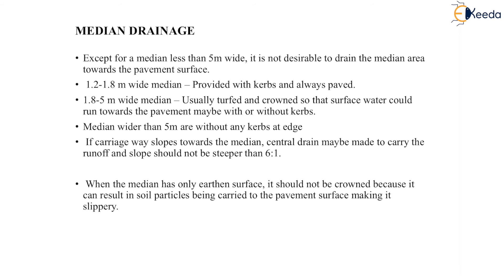Next is median drainage. Except for a median less than 5 meters wide, it is not desirable to drain the median area towards the pavement surface. A 1.2 to 1.8 meter wide median is provided with curbs and is always paved. A 1.8 to 5 meter wide median is usually turfed and crowned so that surface water runs towards the pavement, with or without curbs. Medians wider than 5 meters are without any curbs at the edge. If the carriageway slopes towards the median, a central drain may be made to carry the runoff, and the slope should not be steeper than 6 to 1.